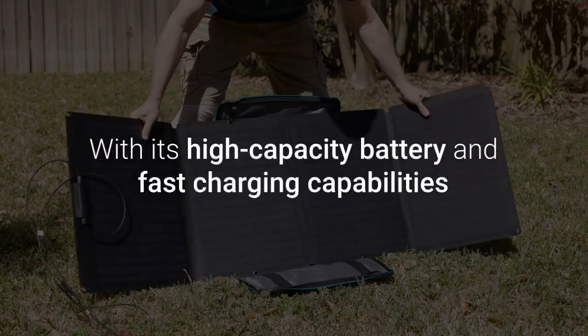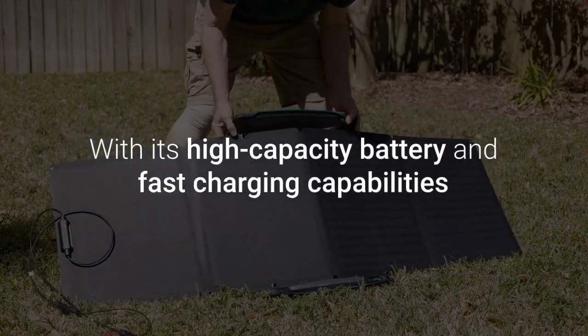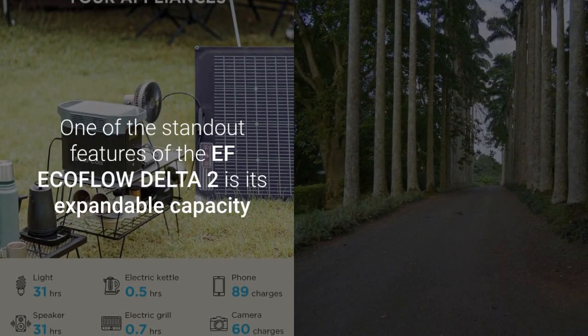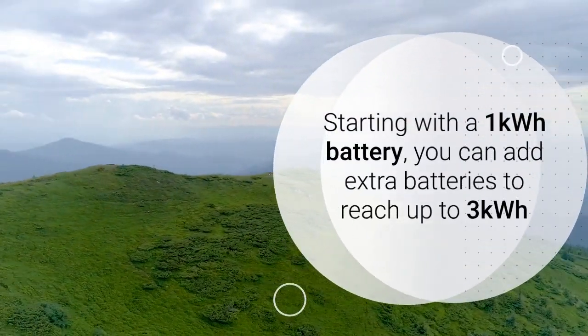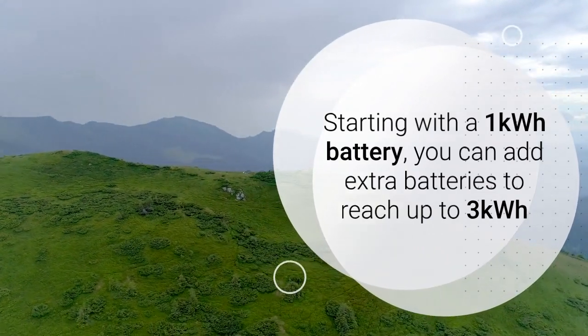With its high-capacity battery and fast-charging capabilities, it ensures you have power whenever and wherever you need it. One of the standout features of the EF EcoFlow Delta II is its expandable capacity. Starting with a 1 kWh battery, you can add extra batteries to reach up to 3 kWh, making it ideal for extended use.